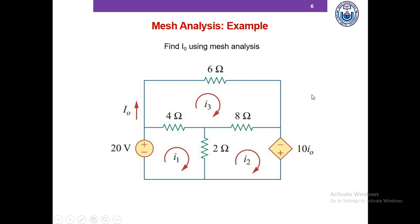Here is another example — please pause and then we'll match our answers. The meshes have been identified here so we didn't have to do that part. In this example the current I0 equals I3, because I0 is the current going through the 6-ohm resistor, and the 6-ohm resistor only exists in the mesh of I3. So the same current I3 flows through the 6-ohm resistor — the magnitude and direction of I0 and I3 are exactly identical.